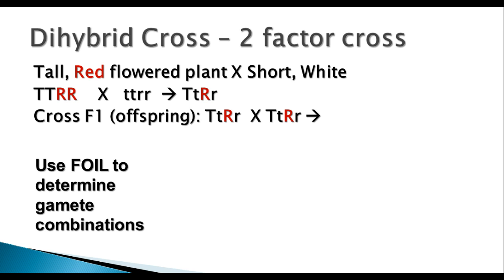Let's talk about a different kind of plant. We have tall plants that have red flowers, and short ones that have white flowers. The capital T stands for tall and the capital R stands for red, and the lowercase t and r represent short and white. If you have a true-breeding tall and red crossed with a true-breeding short and white, your offspring are all going to be tall and red, but they're going to be heterozygous, like we saw last time.